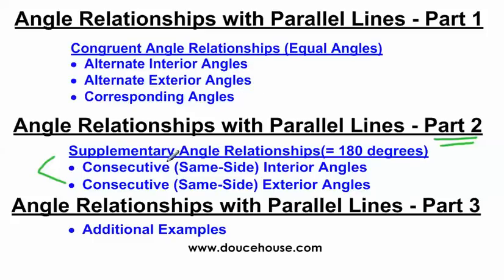Consecutive interior angles have another name: they can also be called same-side interior angles. Your teacher might say same-side interior angles, but a test question might say consecutive interior angles — they're the same thing. Likewise, consecutive exterior angles has another name: same-side exterior angles. Make sure you know those mean the same thing.